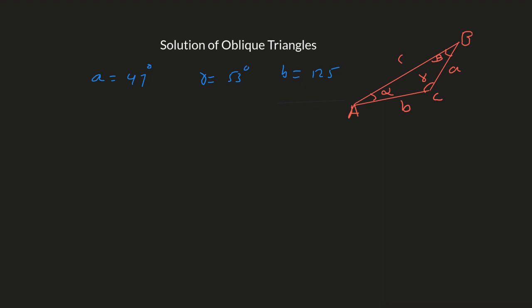Using alpha plus beta plus gamma equals 180 degrees and plugging in the two known angles, you can find the value of beta, which is 80 degrees.